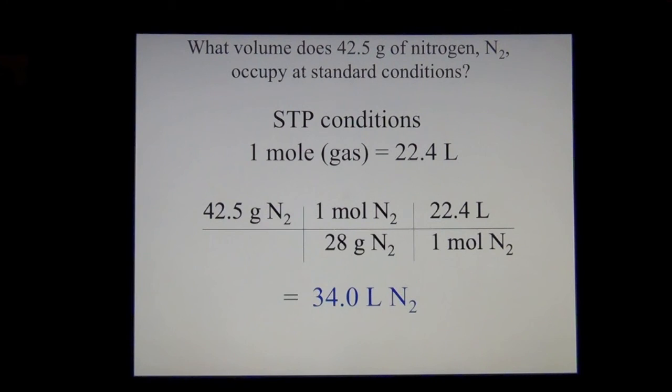So once we've changed the 42.5 grams of nitrogen into moles, we're then going to be able to use the fact that one mole of any gas at STP conditions does have a volume of 22.4 liters.